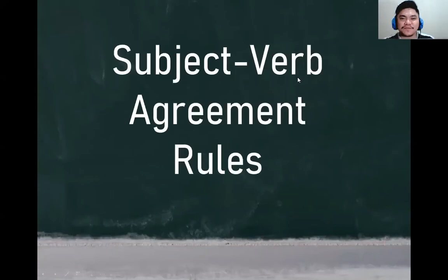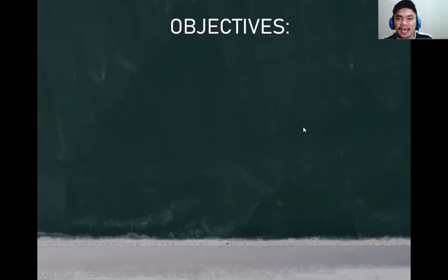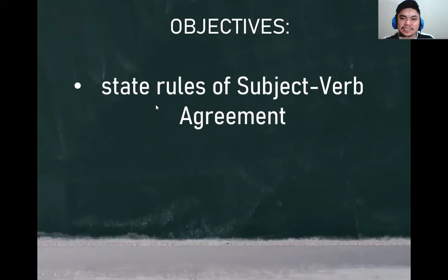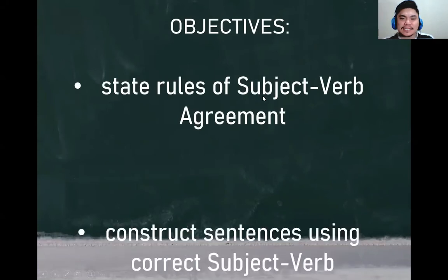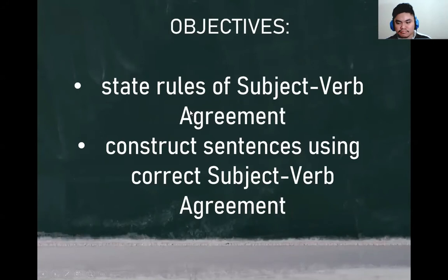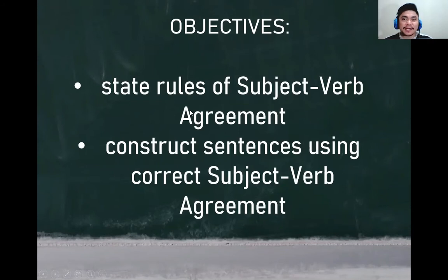We'll be talking about the subject-verb agreement, or the SVA rules. First, what are the objectives we have to achieve for today? First, state the rules of subject-verb agreement. And second, construct sentences using correct subject-verb agreement. It's very important that we know what should be achieved when discussing or learning a particular topic, for you to be guided along the way.